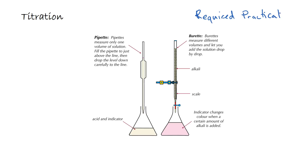Quickly, just to go over: you pipette a known solution into a conical flask and you add some appropriate indicator, which we will talk about in a minute. Then you titrate against the solution in the conical flask. Let's say you put an acid into the conical flask — you then slowly add dropwise a base until there is a permanent colour change from that indicator. The permanent colour change indicates the end point of the titration, which should occur at what we call the equivalence point.